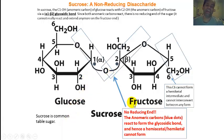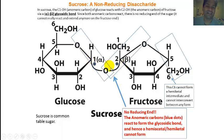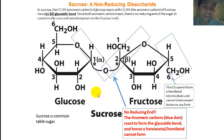Sucrose is a disaccharide consisting of glucose and fructose. In this case, it's the anomeric carbon — carbon 1 of glucose, the alpha anomer — that forms a glycosidic bond with the beta anomer, carbon number 2 of fructose. Remember: aldoses such as glucose have their anomeric carbon at carbon 1; ketoses such as fructose have their anomeric carbon at carbon 2. So the beta anomer reacts with the alpha anomer, forming an alpha-1, beta-2 glycosidic bond. Notice the two anomeric carbons have joined in the glycosidic bond and there is no free reducing end. Because of the lack of a reducing end and the inability to reform the hemiacetal or hemi-ketal, sucrose is a non-reducing disaccharide.